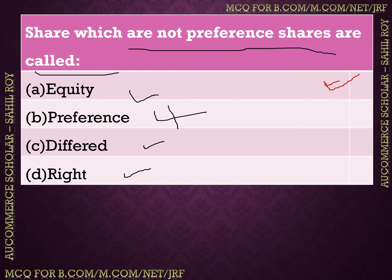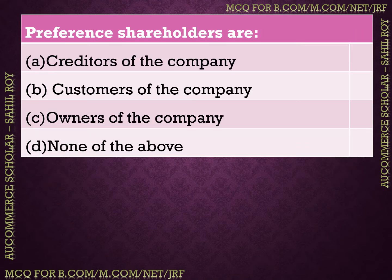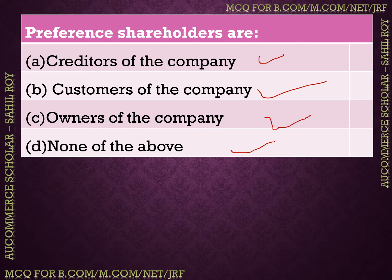The next question: Who are preference shareholders? Options: creditors of the company, customers, owners, or none of the above. Preference shareholders are shareholders and technically owners, but in accounting terms they are treated more like creditors of the company, as their claims are like a liability from the company's perspective.